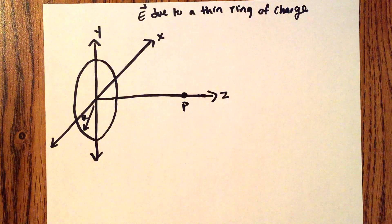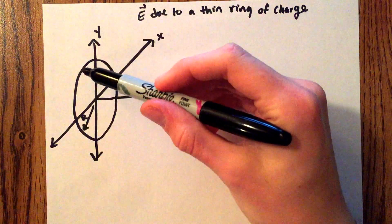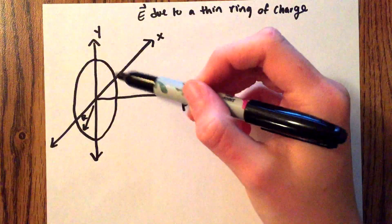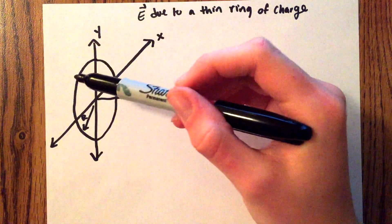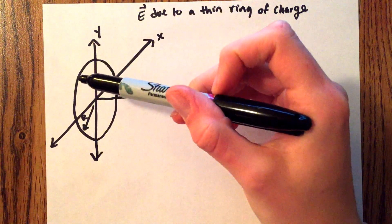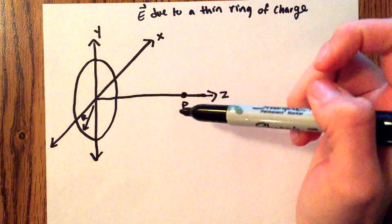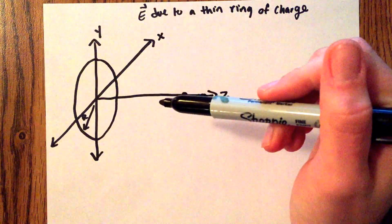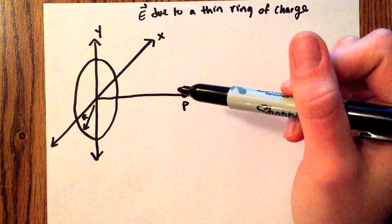The strategy in order to do this will be by breaking the ring up into tiny parts and finding the electric field caused by each of those parts and then summing those together through an integral.